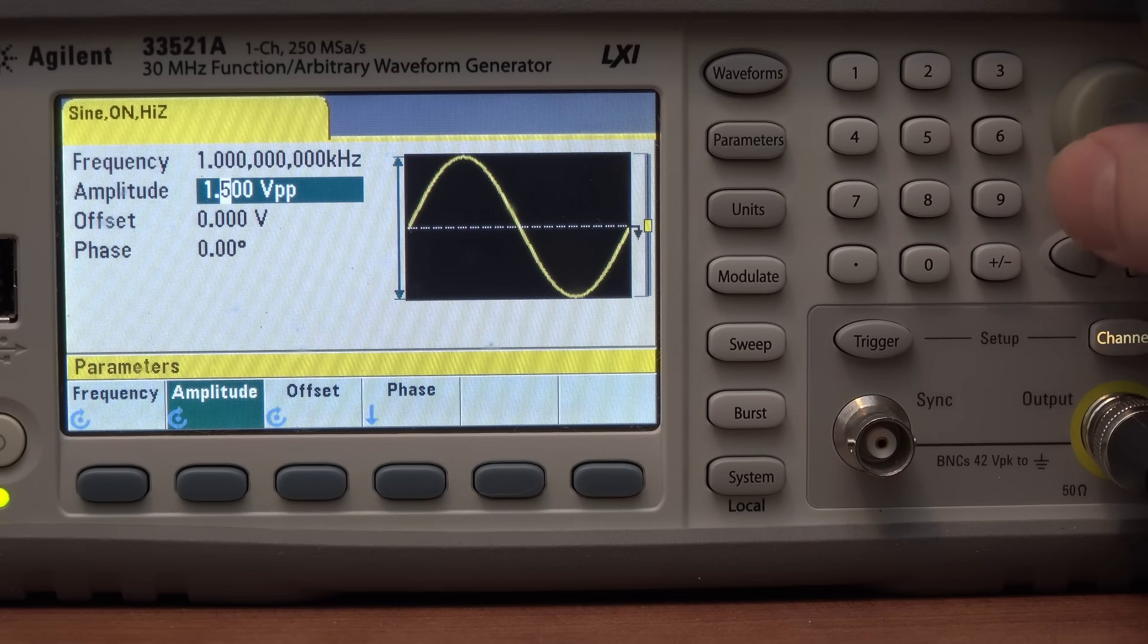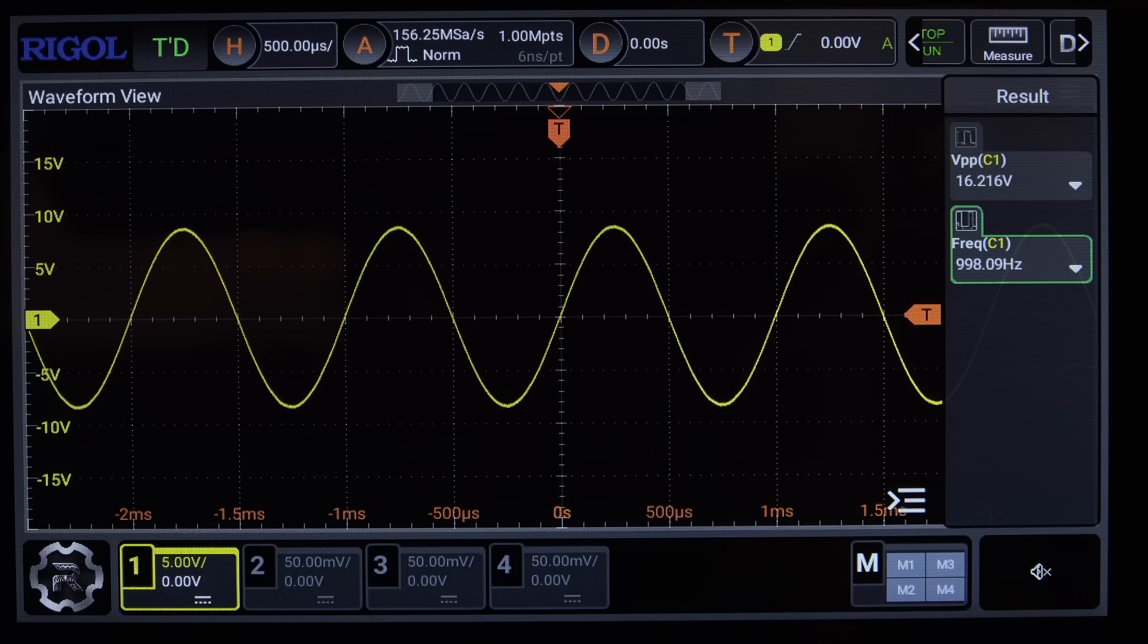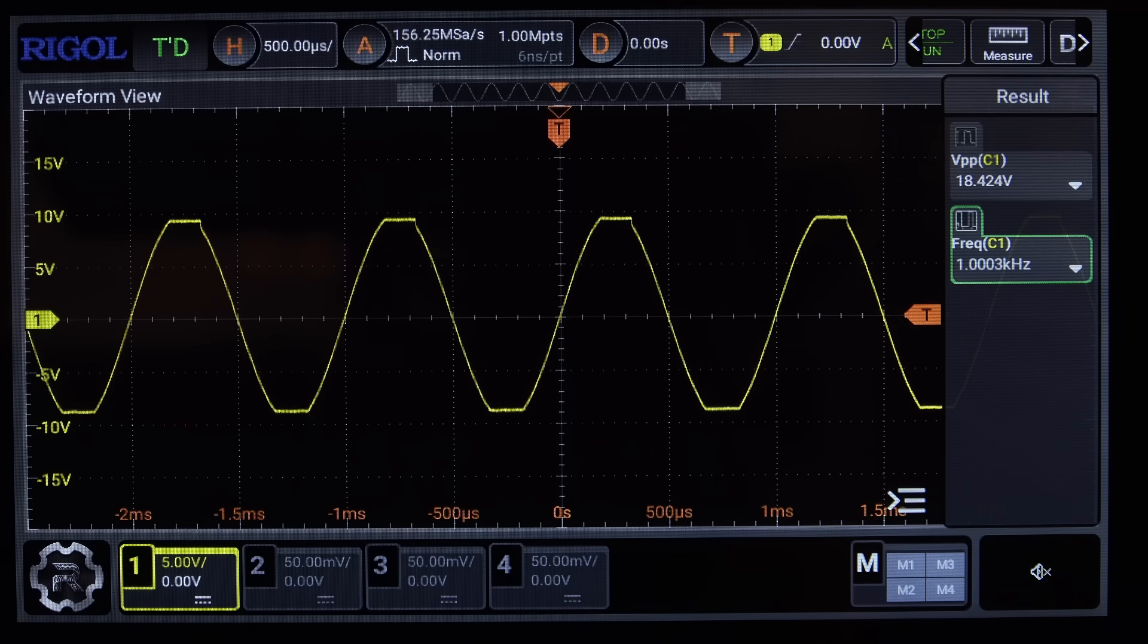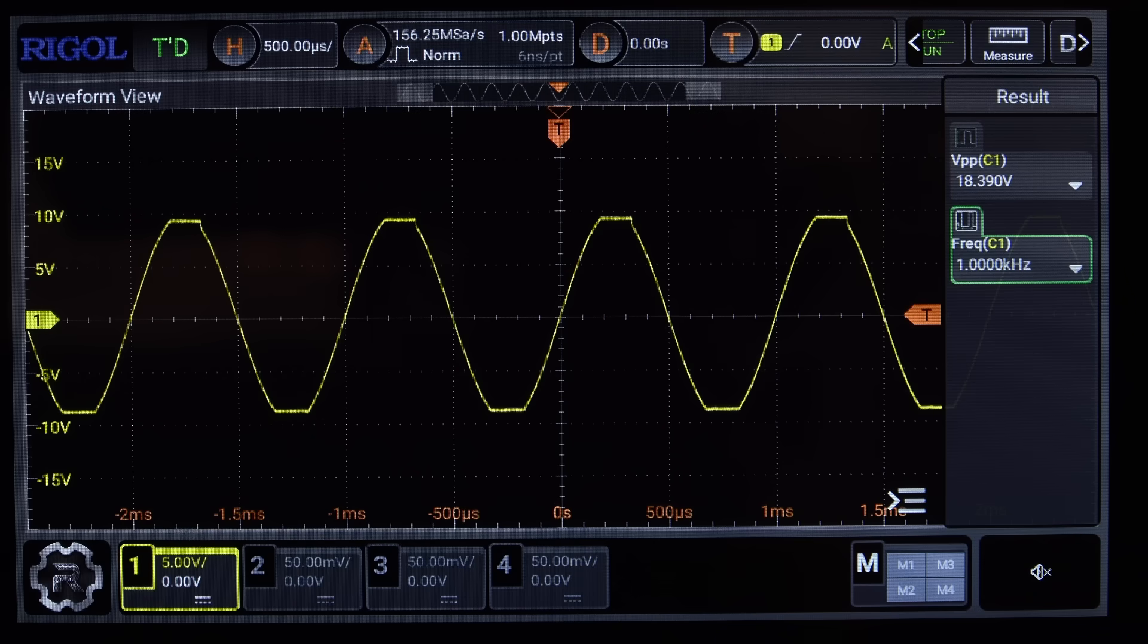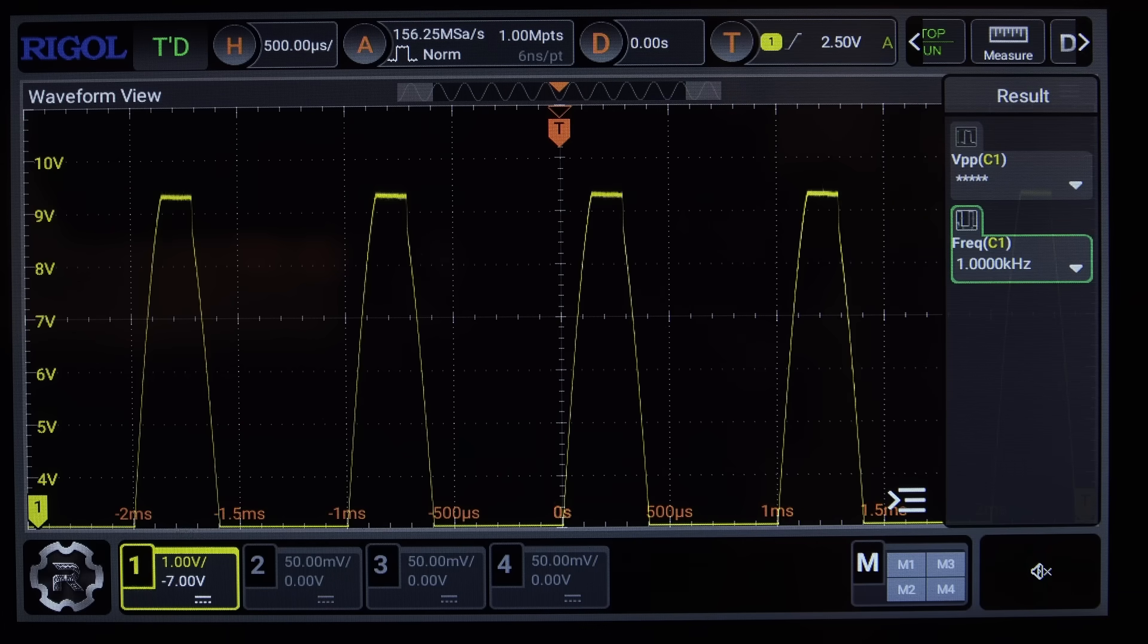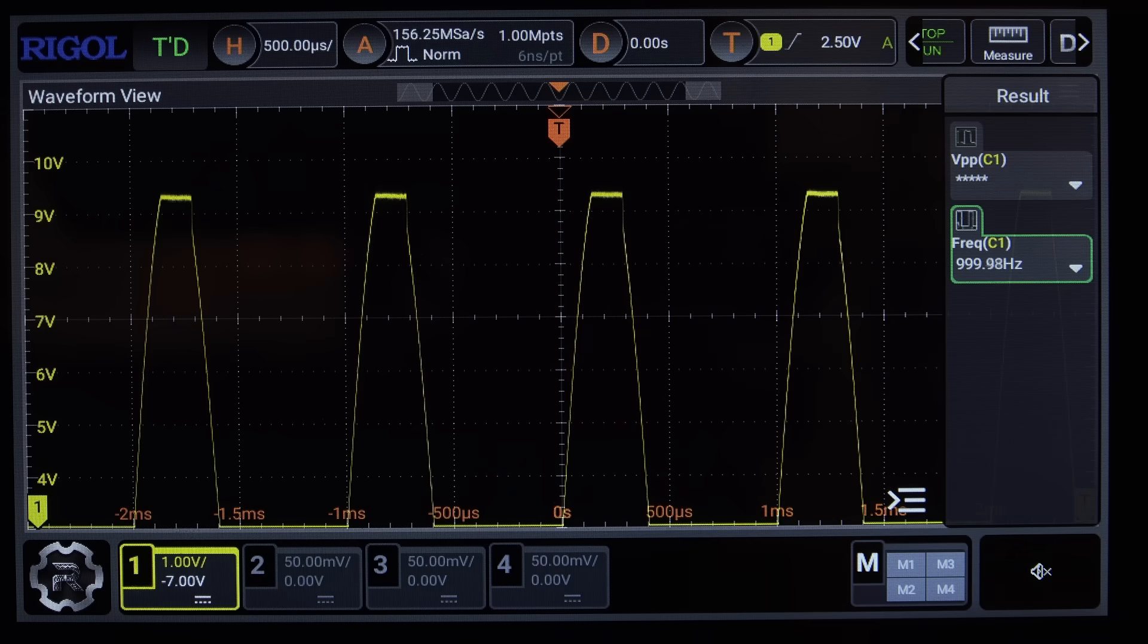But watch what happens when we increase the input voltage to 2 volts. You would think we'd get a 20 volt sine wave on the output, but nope, not even close. Take a look at what's happening on the top and bottom of the waveform. The voltage is trying to swing up to the plus 10 volts, but it's getting limited by the 741. The 741 output is only able to swing within 0.8 volts of the 10 volt supply rail, limiting the top of our sine wave to 9.2 volts.